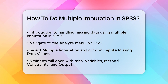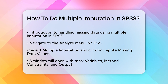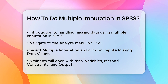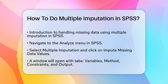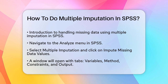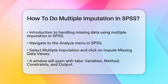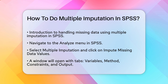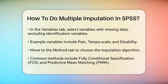In the Variables tab, select all the variables that contain missing data. Make sure to exclude any identification variables that you don't want to analyze. For example, if you have a dataset with variables like Pain, Tampa Scale, and Disability, and these variables have missing values, you would select these variables here.